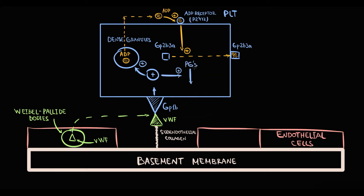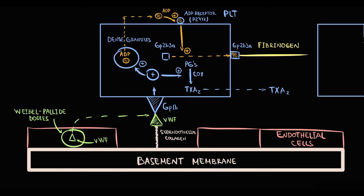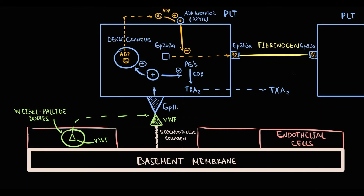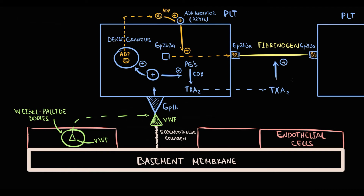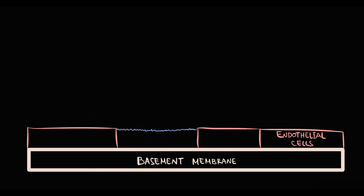In addition to this, platelets begin to produce thromboxane A2 from prostaglandins. The function of thromboxane A2 is to promote aggregation. When fibrinogen encounters a GP2B3A receptor on the platelet surface, fibrinogen immediately binds to GP2B3A. And when another platelet comes to the site of injury, it immediately binds by GP2B3A to fibrinogen. This process is significantly accelerated by thromboxane A2, and it occurs over and over again until a platelet plug is formed. This gathering of platelets at the site of injury is called aggregation.